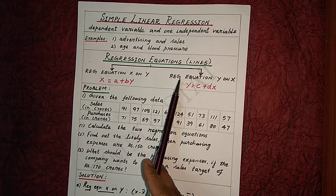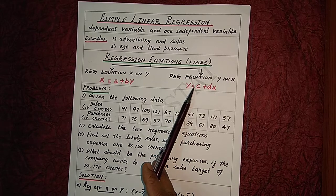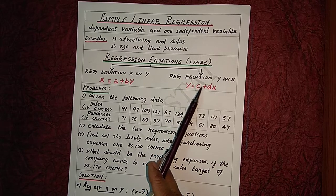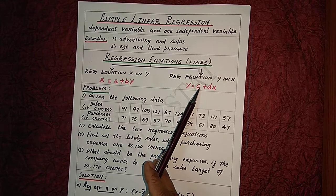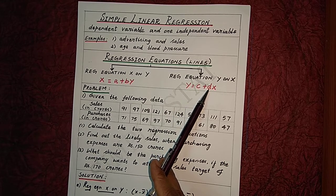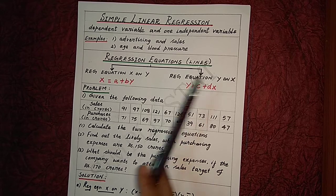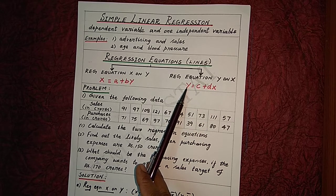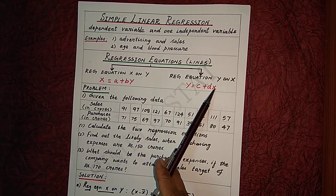Similarly, the general form of the regression equation y on x is y = c + dx, where y is the dependent variable, c is the y-intercept, d is the slope of the line, and x is the independent variable. This equation gives the most probable values of y for given values of x.